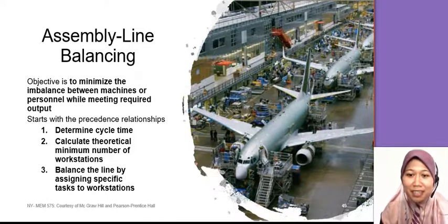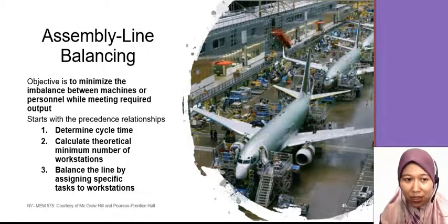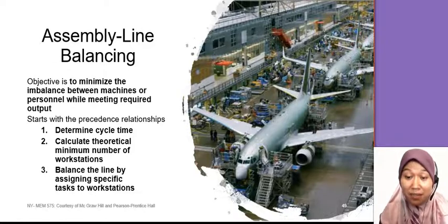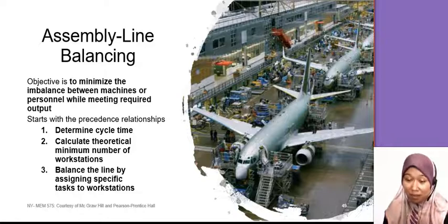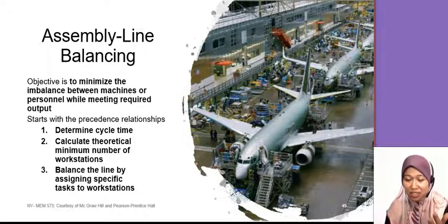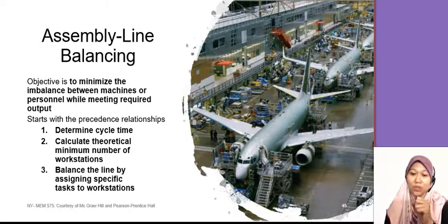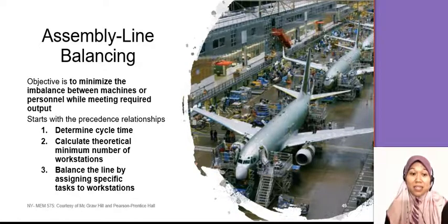Okay, now we are going into the calculation part involved with the line balancing. In this line balancing, we're going to look at the cycle time, the number of workstations, efficiency, and then we're going to arrange all the tasks into workstations. All of this requires some calculation.